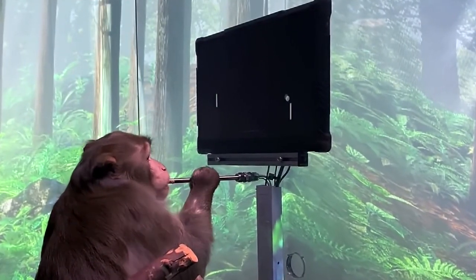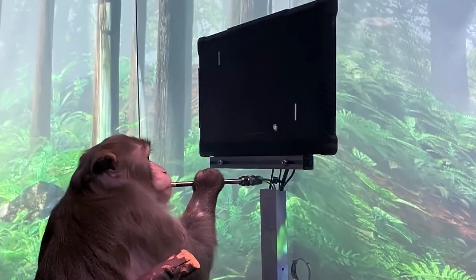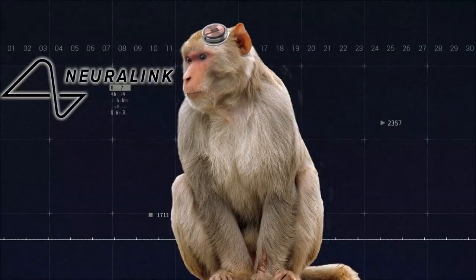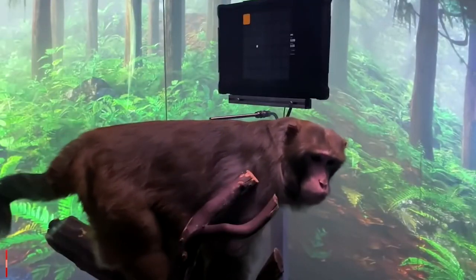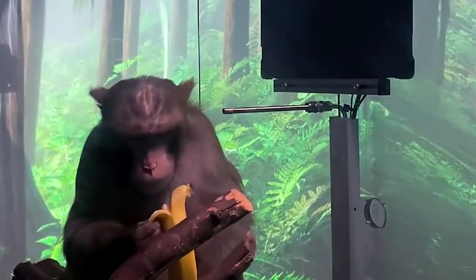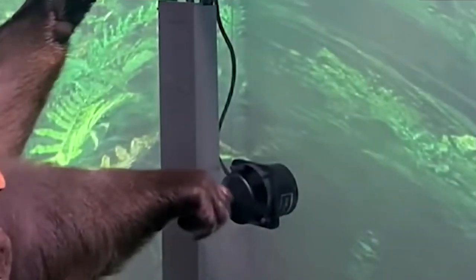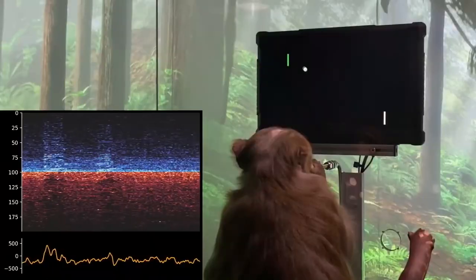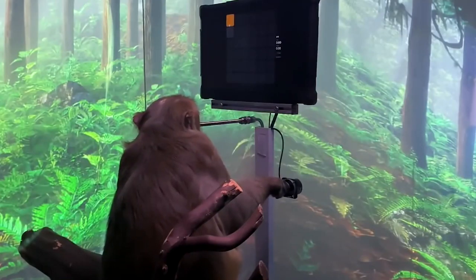In April 2021, Neuralink took their animal demonstrations further by showcasing a monkey controlling a video game with its thoughts. It was Pager, a macaque monkey engaged in video gaming in exchange for banana smoothies. Pager used a joystick that wasn't attached to the gaming system to play the games, which meant that he was using his brain impulses to move the pointer.